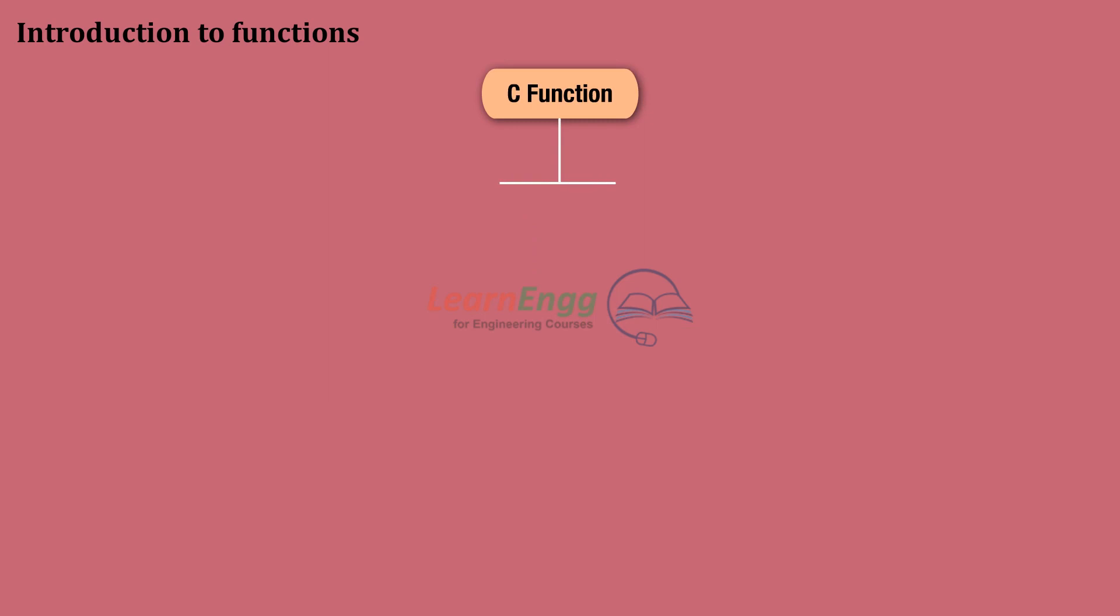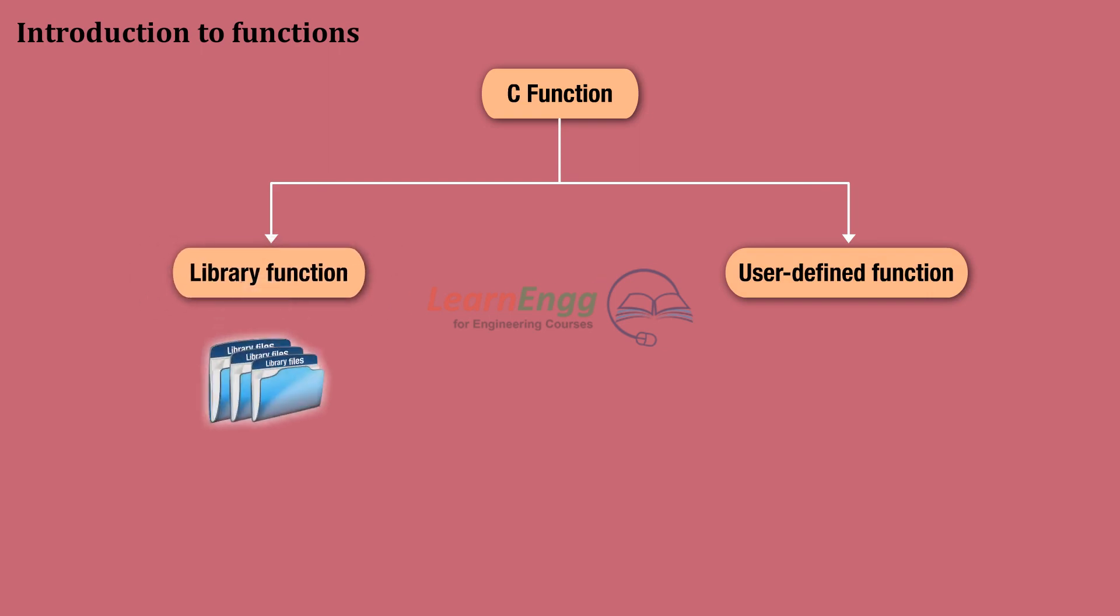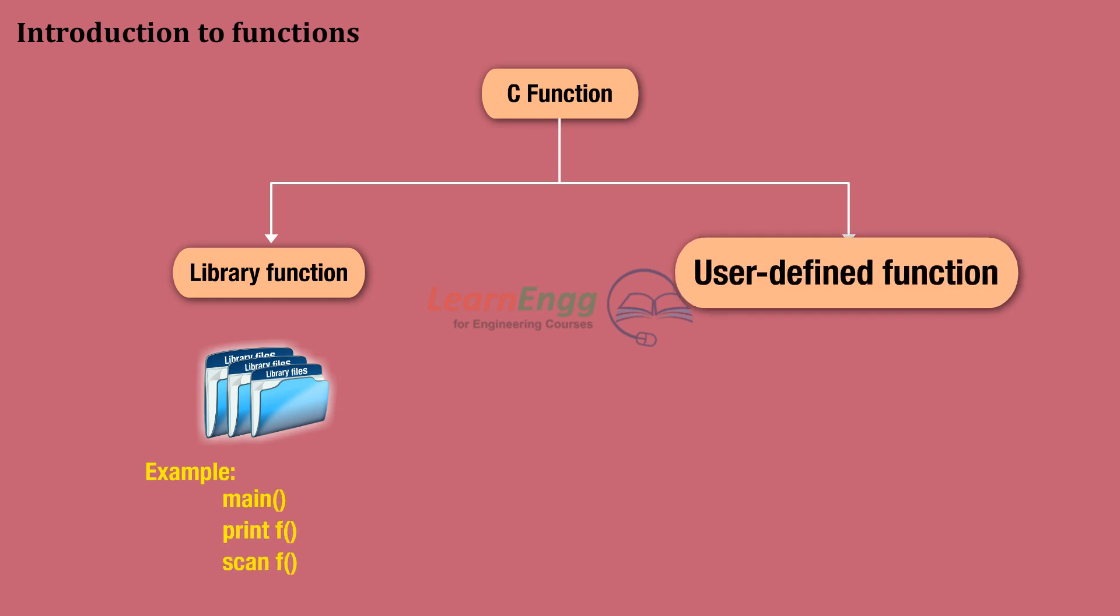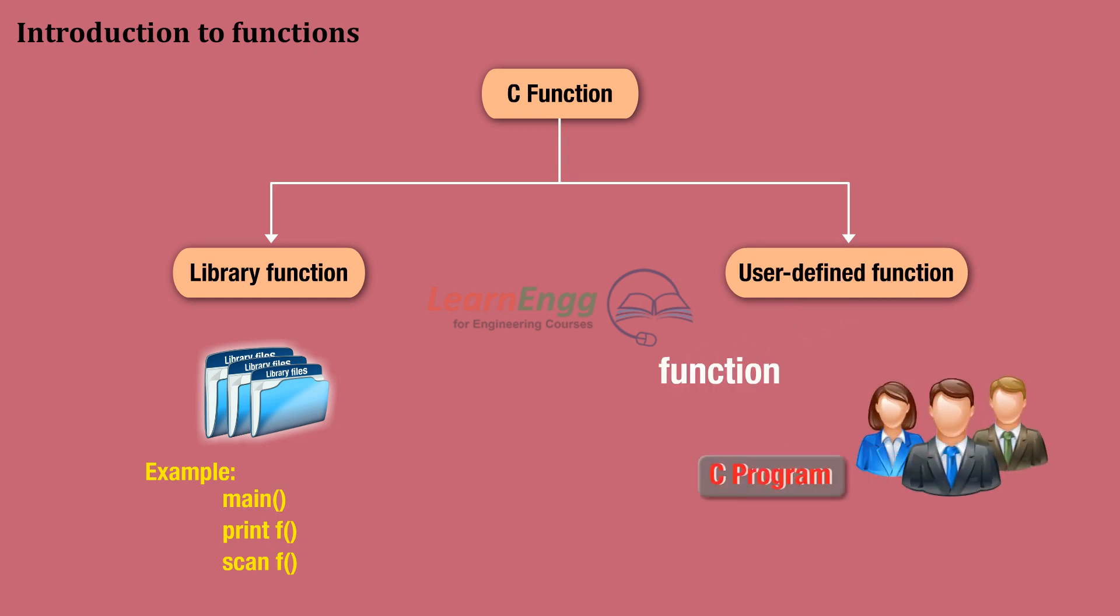C function is divided into two following categories. Library function: A user-defined function is one which is not required to be written and is already stored inside the library. Examples of library functions are main, printf, scanf, etc. A user-defined function is one which is developed by the programmer while writing the program. This function can later become a part of a C program.